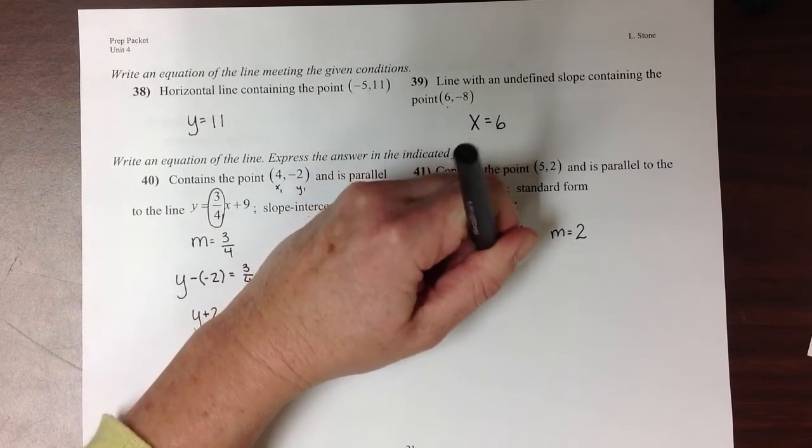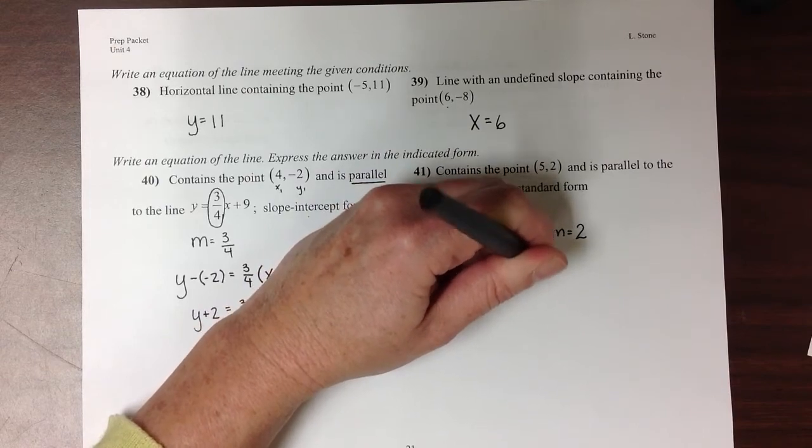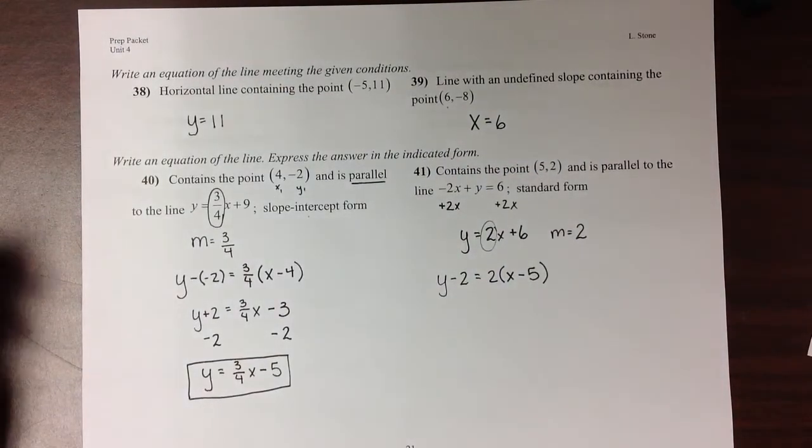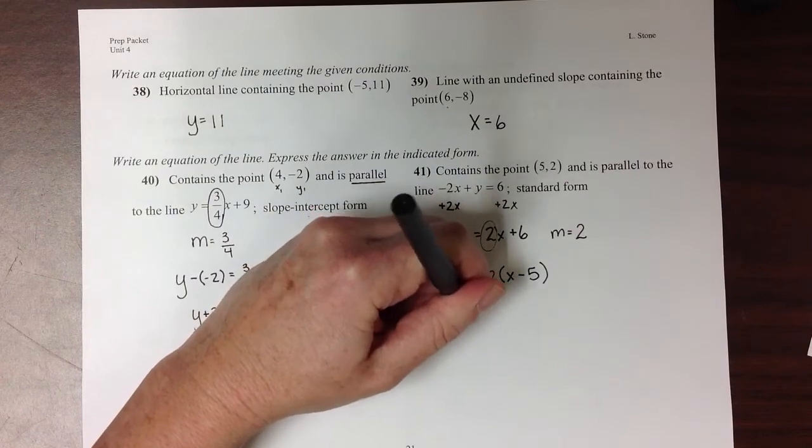y minus 2 equals 2 times x minus 5. And then distribute the 2 through.